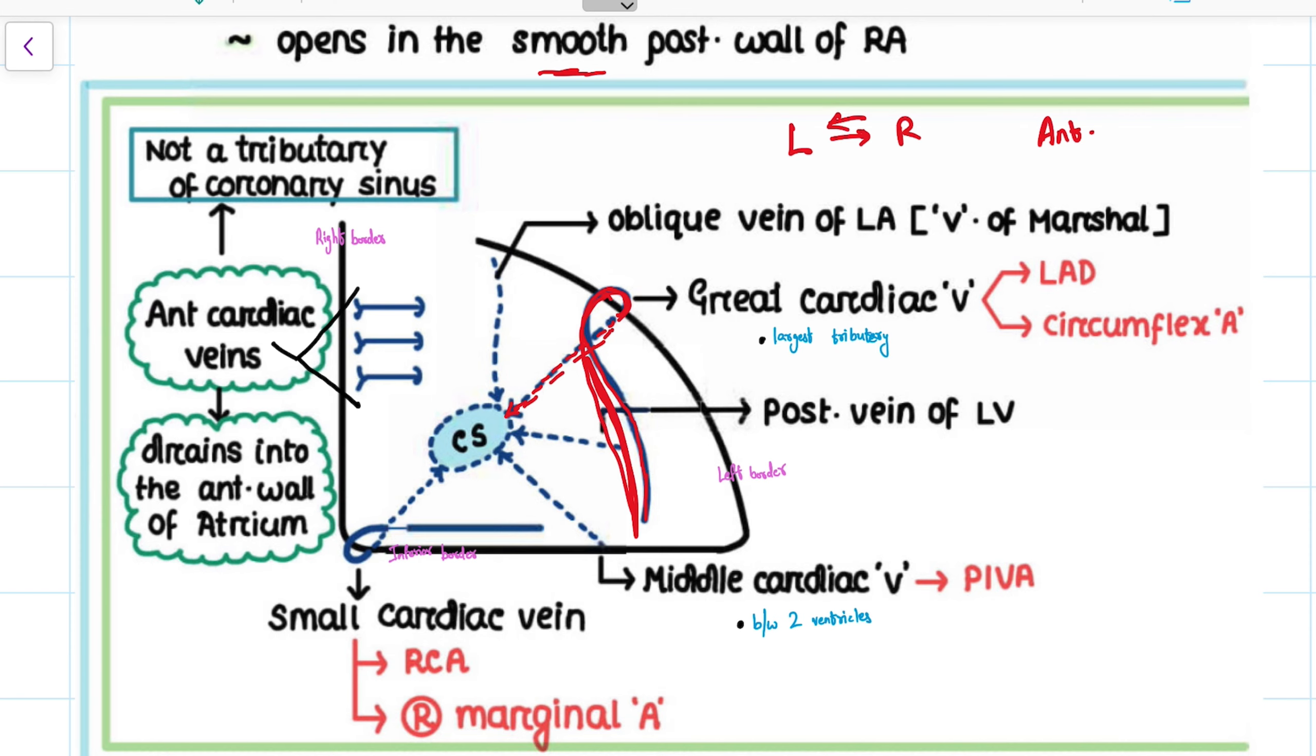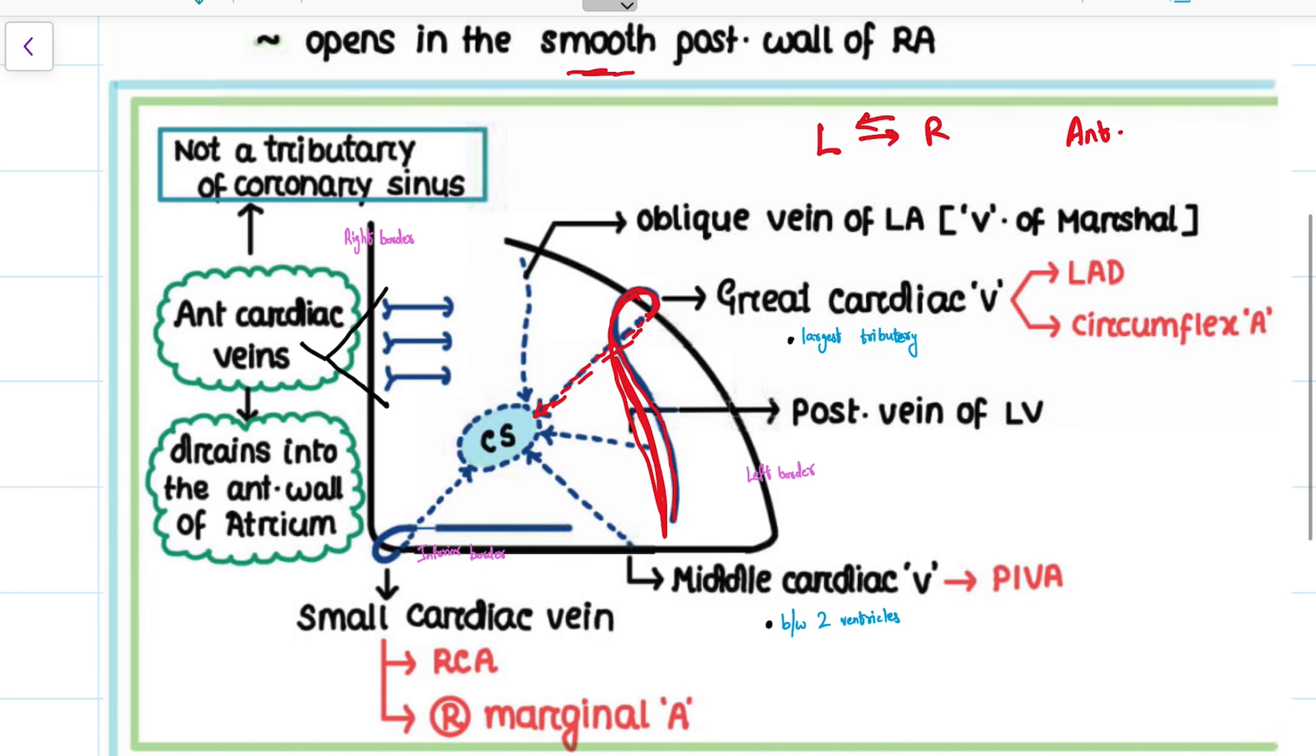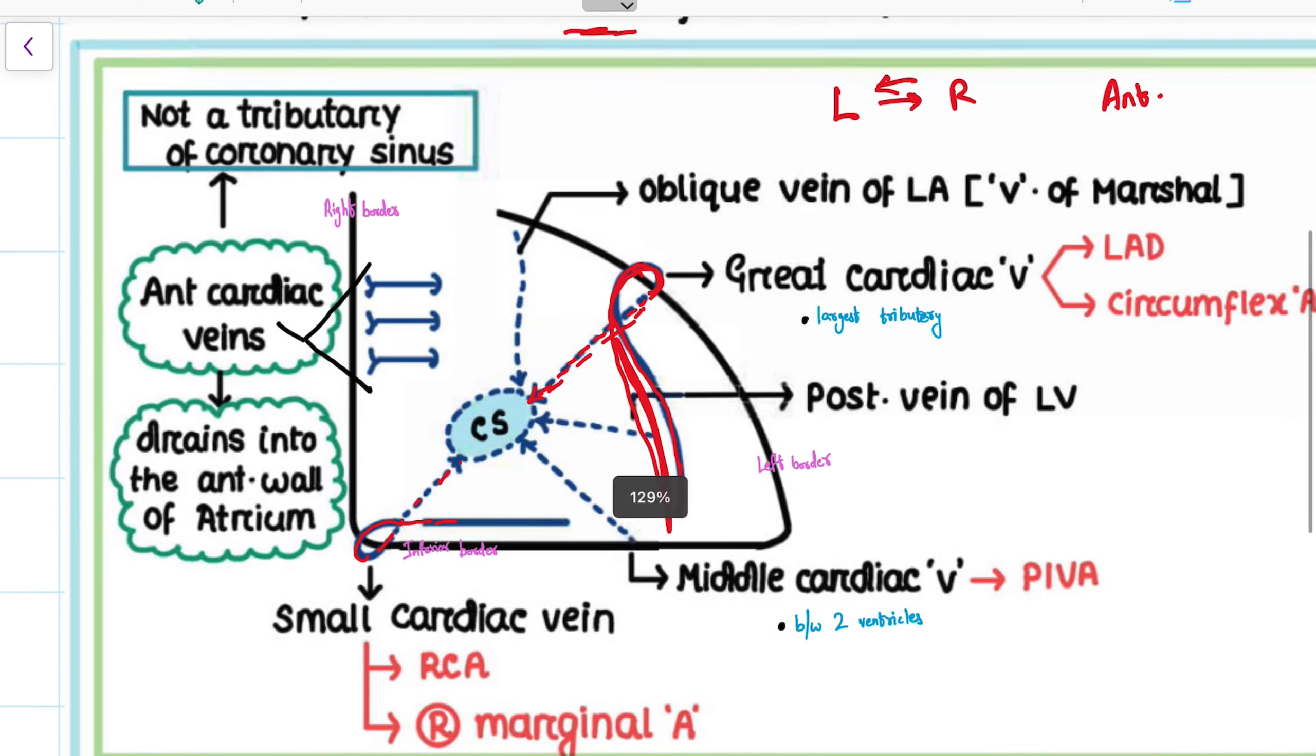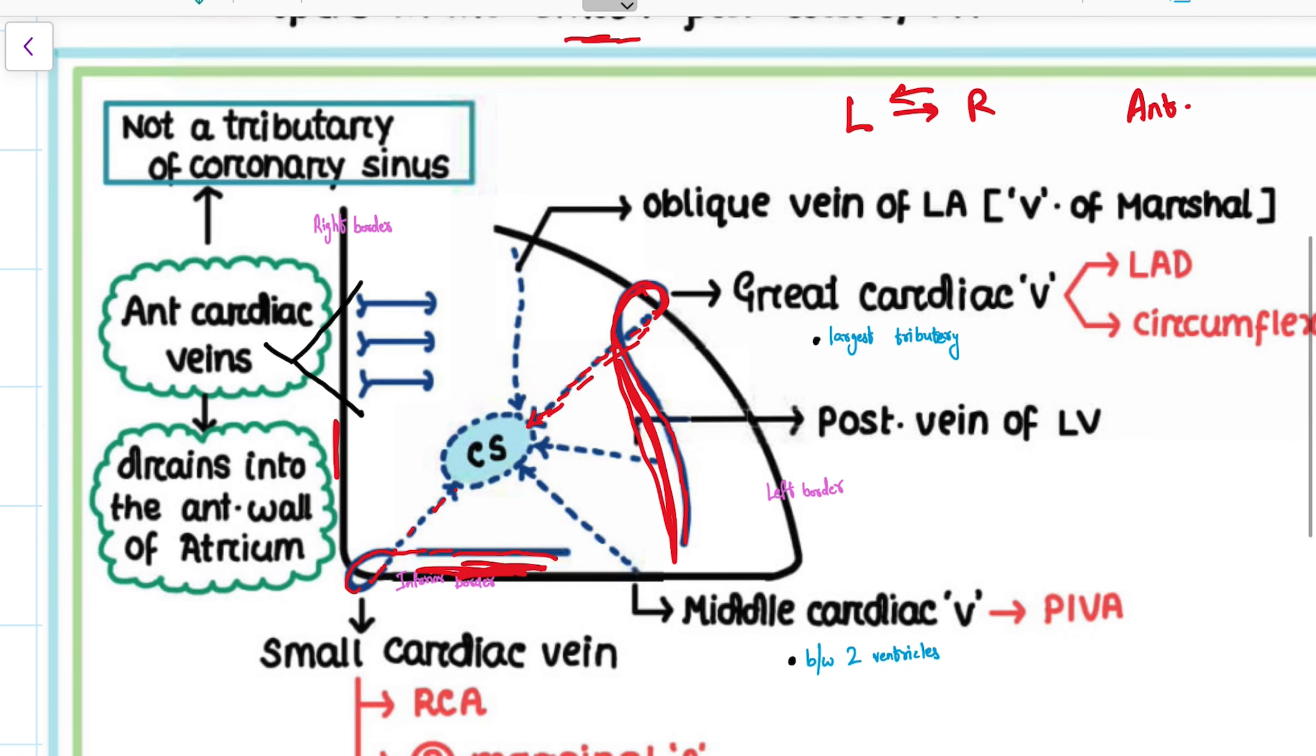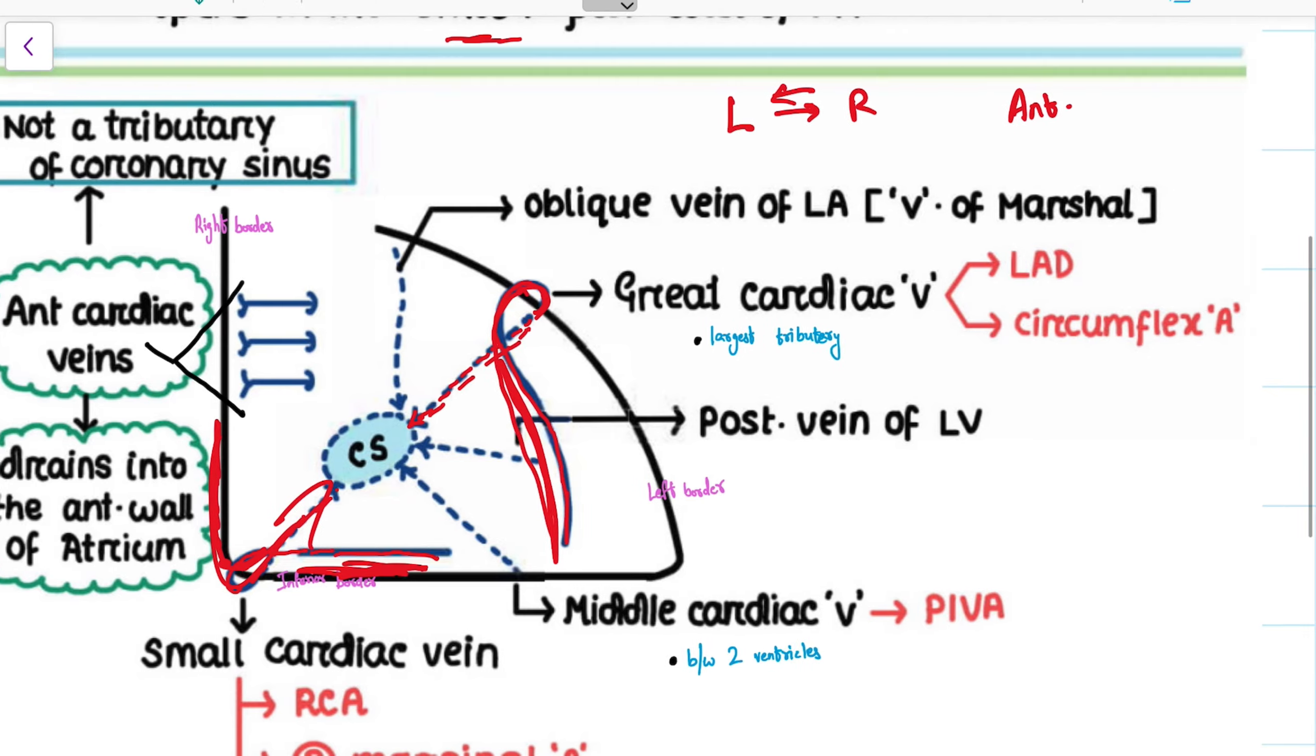Now let's go to the small cardiac vein. The small cardiac vein goes along the inferior border and then winds and goes to the posterior surface and then drains into the coronary sinus. As you know, in the anterior aspect, what is there? The right marginal artery is actually present over here. And from here comes the right coronary artery, which goes posteriorly.